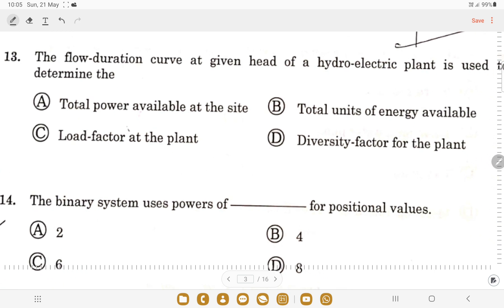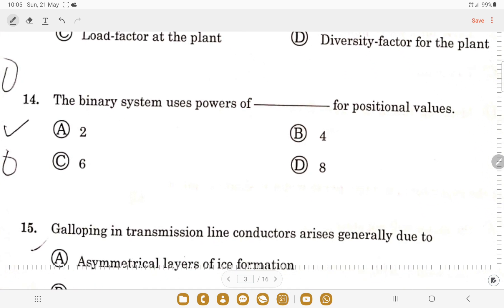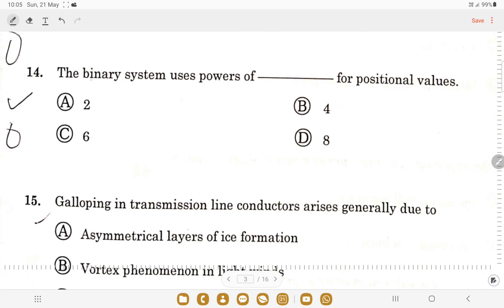Question 13: the flow duration curve at a given head of a hydroelectric plant is used to determine? The flow duration curve of a hydroelectric plant always gives you the total power that is available at the site. The curve is between the flow and the time length. So that means it gives us the total power. Option A is the correct one. Question 14: the binary system uses powers of what for positional values? It always uses powers of 2, so option A is correct.